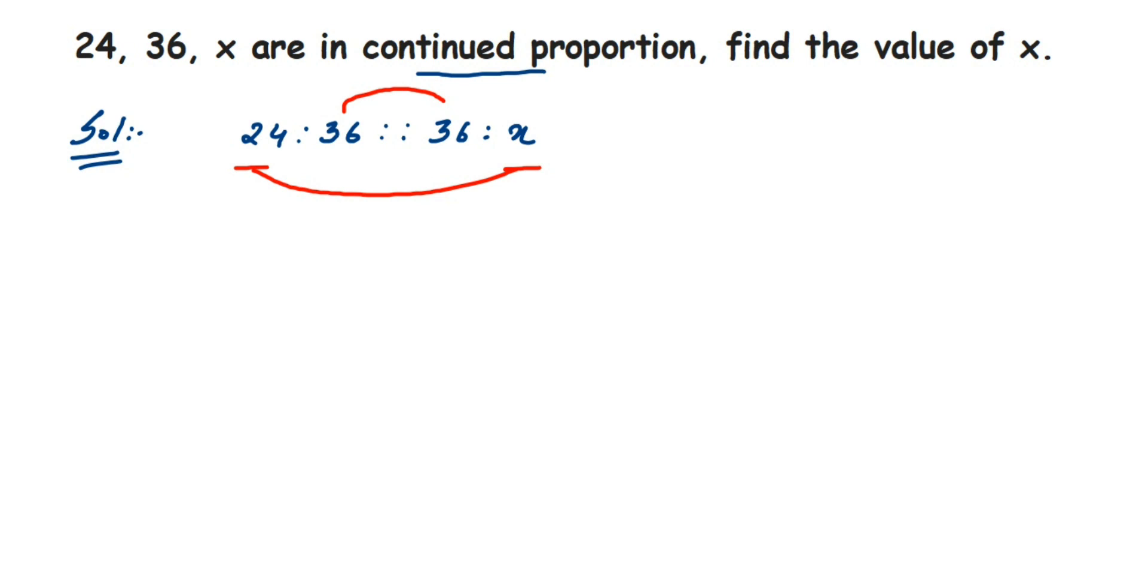Here, product of extremes will be equal to product of means. If they are in proportion, this will apply here. Now the numbers in extremes are 24 and x, so this will be equal to 24 multiplied by x is equal to product of means, so 36 into 36.